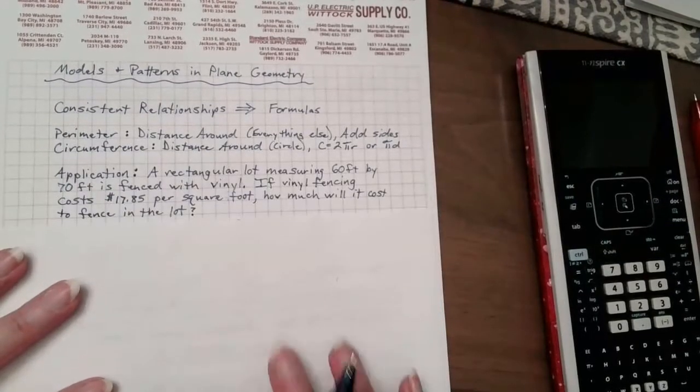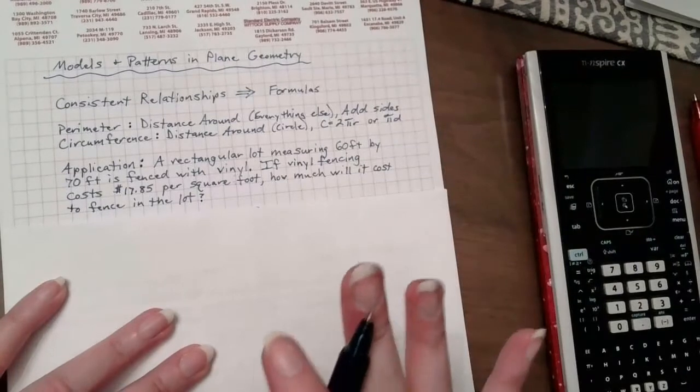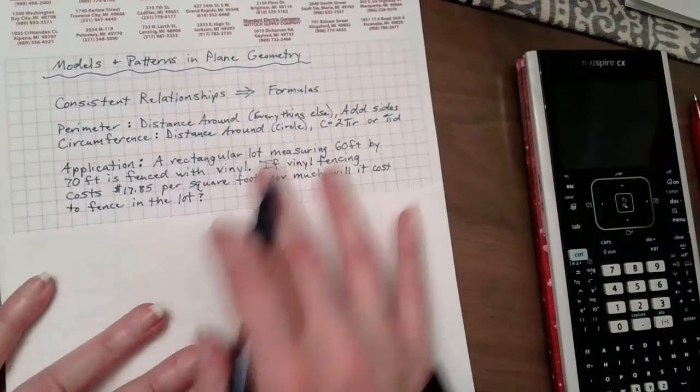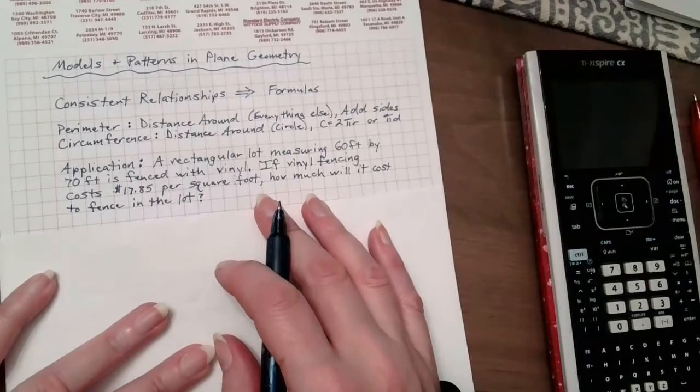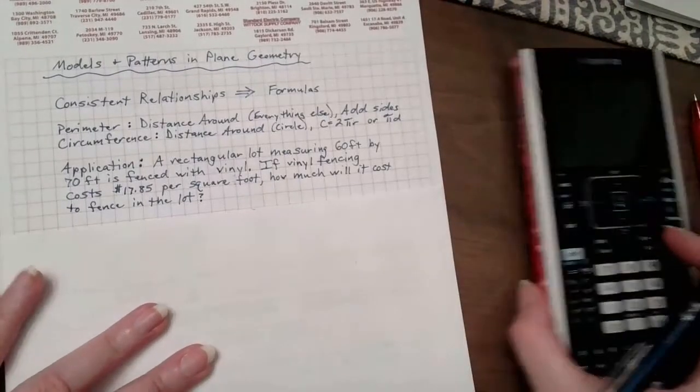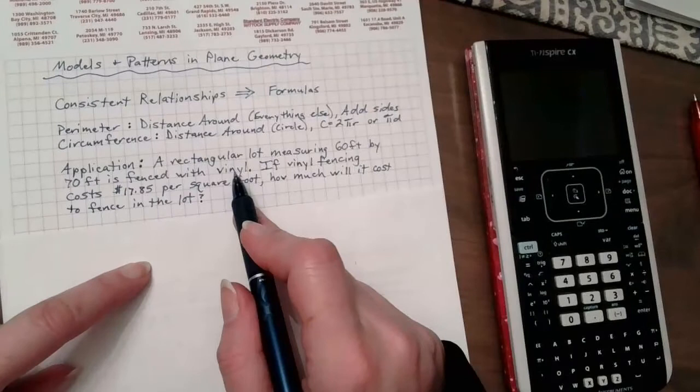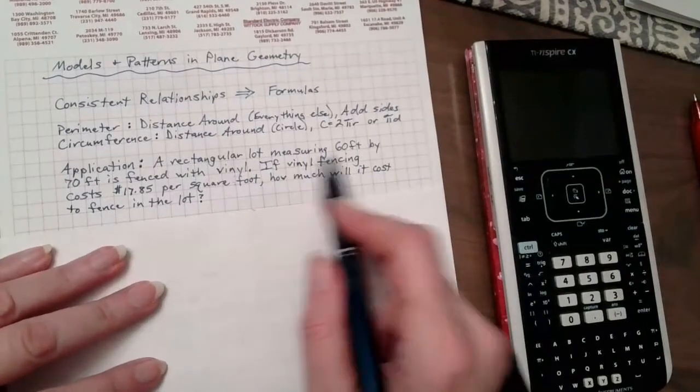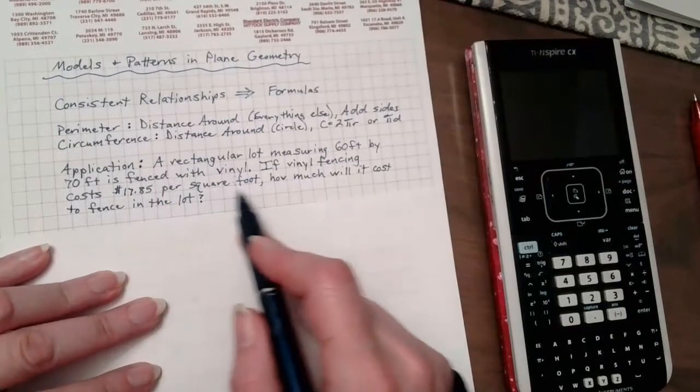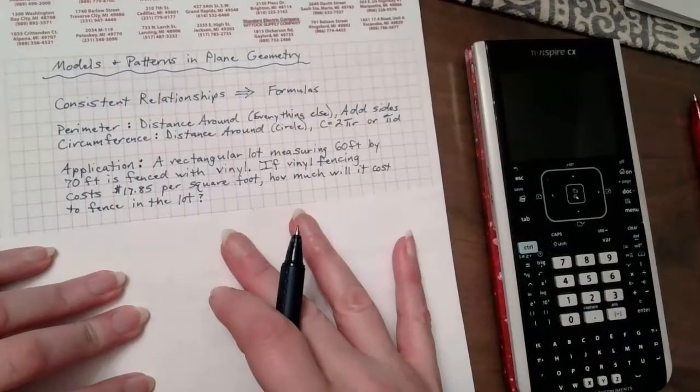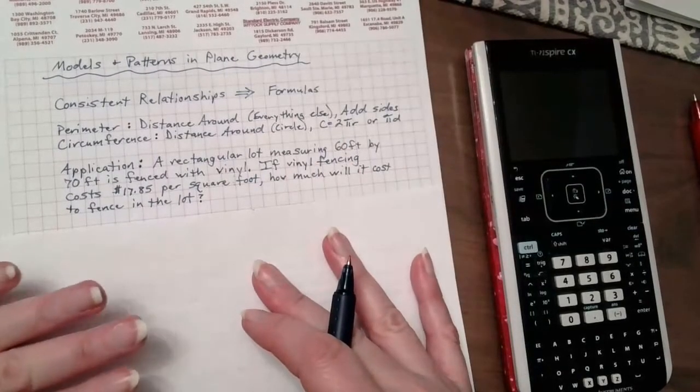Alright, so how might we use something like this? Here's a lovely application. Quite frankly, people don't usually find just perimeters and circumferences for the fun of it. They usually want to do something. And if you've ever tried to do anything, especially around your house, oh my gosh. You run stuff like this all the time, and you don't think, hey, I'm going to do math now. You're just like, dude, I want to buy a fence. Do I have enough money or not? Quite frankly, that's sort of me. I need to put up a fence this summer. I don't know if I have enough money or not. But my yard is not this big, and I'm not going to use vinyl, because vinyl is too expensive. I looked it up. So, I have a rectangular lot, hypothetically, that measures 60 by 70 feet, and it's going to be fenced with vinyl. If vinyl fencing costs $17.85 per square foot, how much will it cost to fence in the lot?